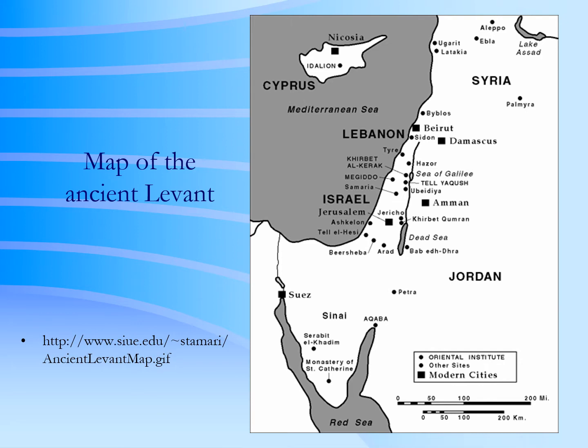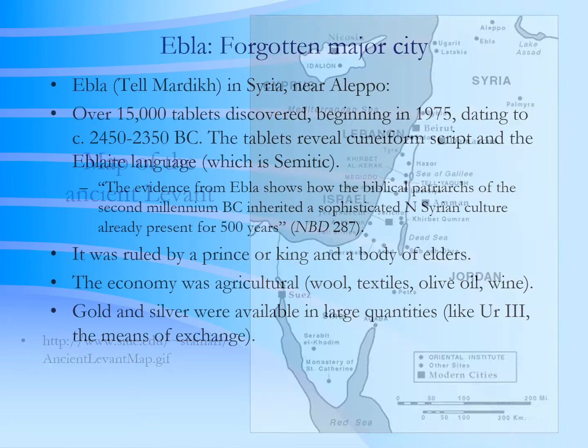On this map you can see a number of the places I've just noted, such as Jericho, and to the north of it Damascus. You see Ebla near the top and Ugarit near the coast. I'm going to speak on Ugarit and Ebla here shortly.